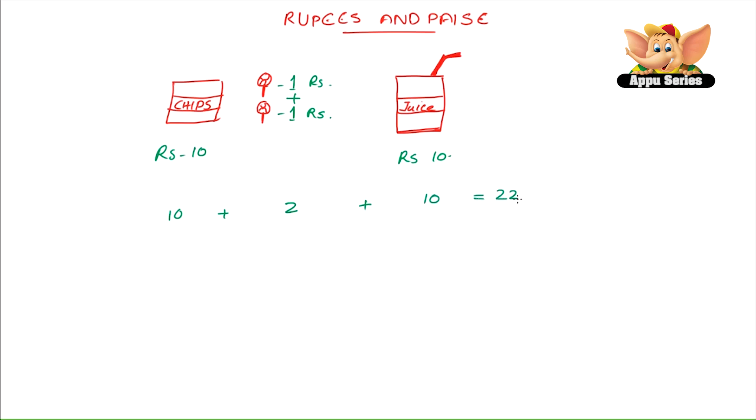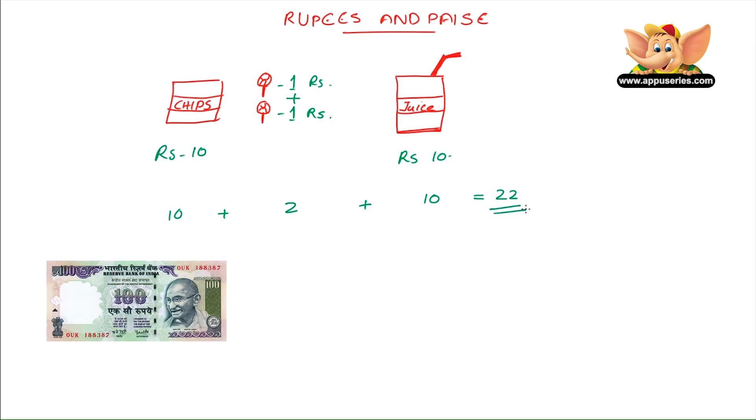So now you have a 100 rupee note on you. How much money would be left with you if you buy these things? Let's subtract 22 from 100, equals 78. So that's how you know you have rupees 78 left.